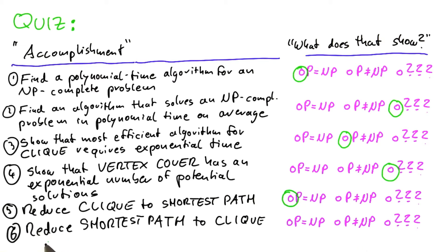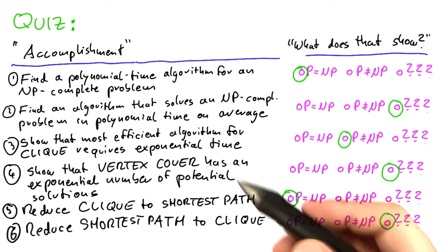If, on the other hand, you manage to reduce shortest path to clique, that doesn't really have any implications, because all you've shown is that shortest path is an easier problem than clique, which is something we already know.